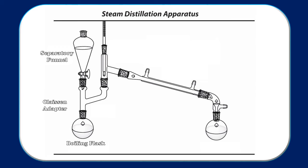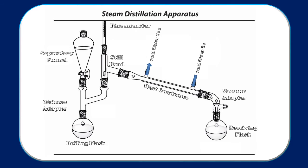From the other side of the Claisen adapter onward, we have a simple still, including a still head, a thermometer to help monitor the temperature, a West condenser with cold water plumbed in the bottom, out the top, a vacuum adapter, and of course a receiving flask to collect our oil and water mixture.